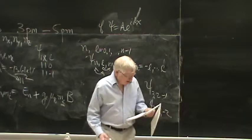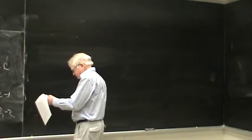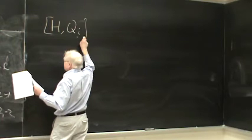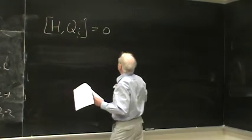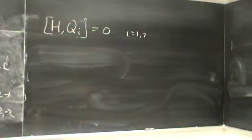Supersymmetric quantum mechanics was invented by someone named Nikolai, and also independently by Witten. The idea is this: we've got a Hamiltonian H and then we've got some charges Q_i. The idea is that these charges commute with the Hamiltonian, i = 1, 2, however many there happen to be, up to n.